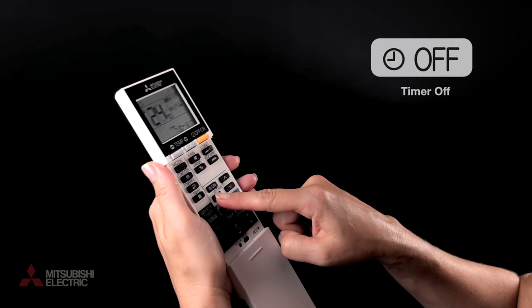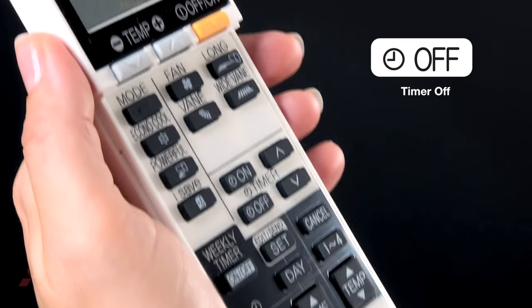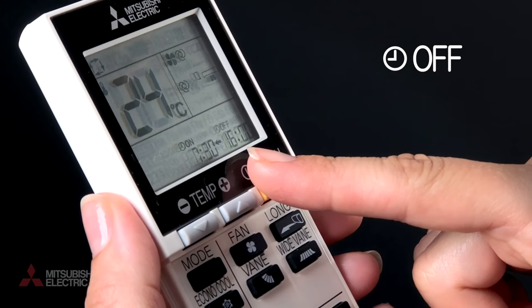To set the timer off function, press the timer off button. The timer off symbol will start flashing.